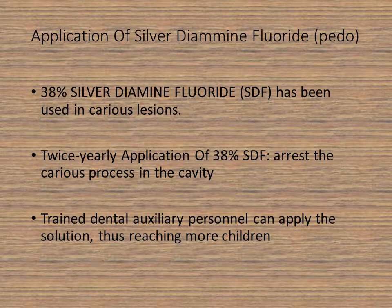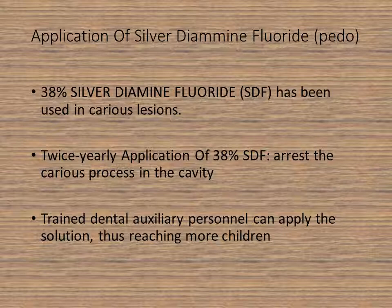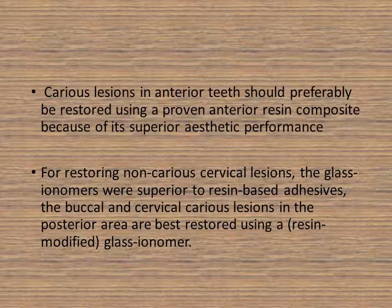Silver diamine fluoride was previously used in the department of periodontics as a 38% solution and was very popular. However, because of aesthetic concerns — it looks very similar to amalgam fillings due to the silver component and gives a ghastly appearance — it is no longer widely practiced. Silver diamine fluoride has known to arrest dental caries, but it has now been replaced by resin composites and glass ionomer restorations. You can also use a combination — the resin-modified glass ionomer — to get the best of both worlds.